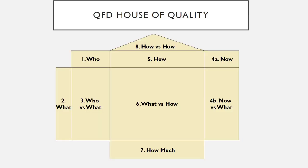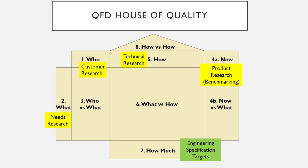Here's what the QFD house of quality looks like. Most of what's in the QFD comes out of research you've already been performing. The who and what criteria come from your customer research and needs research. The how — how you'll assess things — comes partly from your technical research on what tests you can perform. Current performance and benchmarking come from product research. The output of your QFD is specific engineering specification targets: how you're going to test and what target value you're looking for.